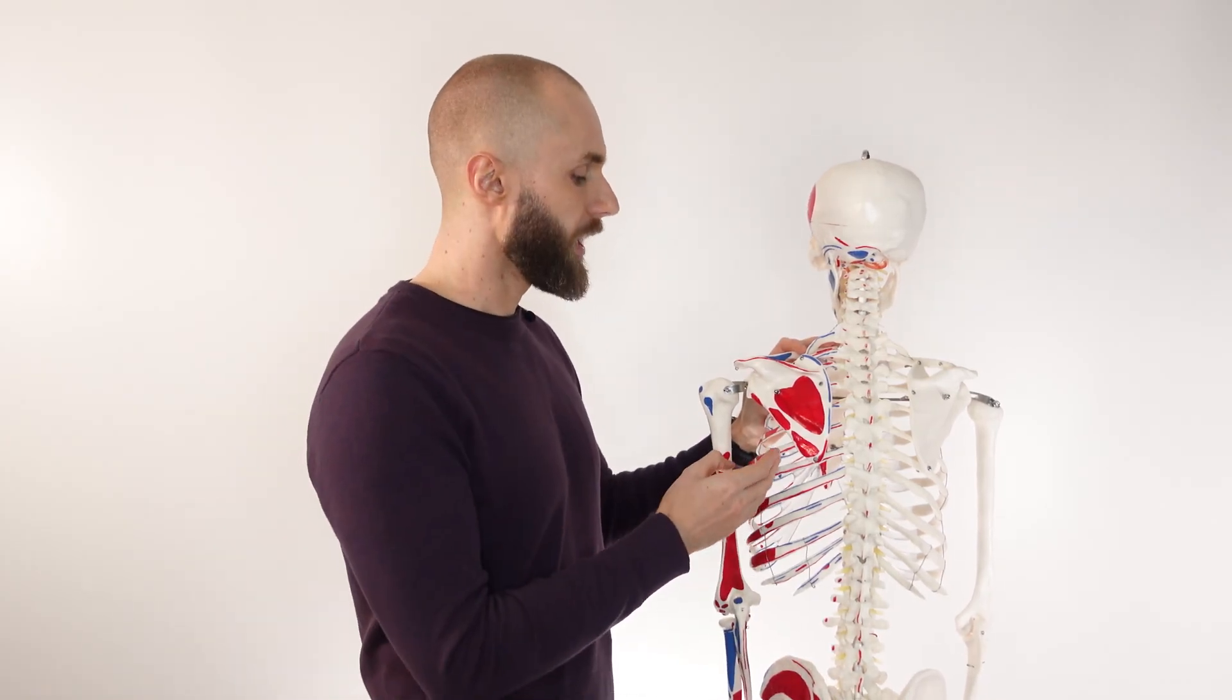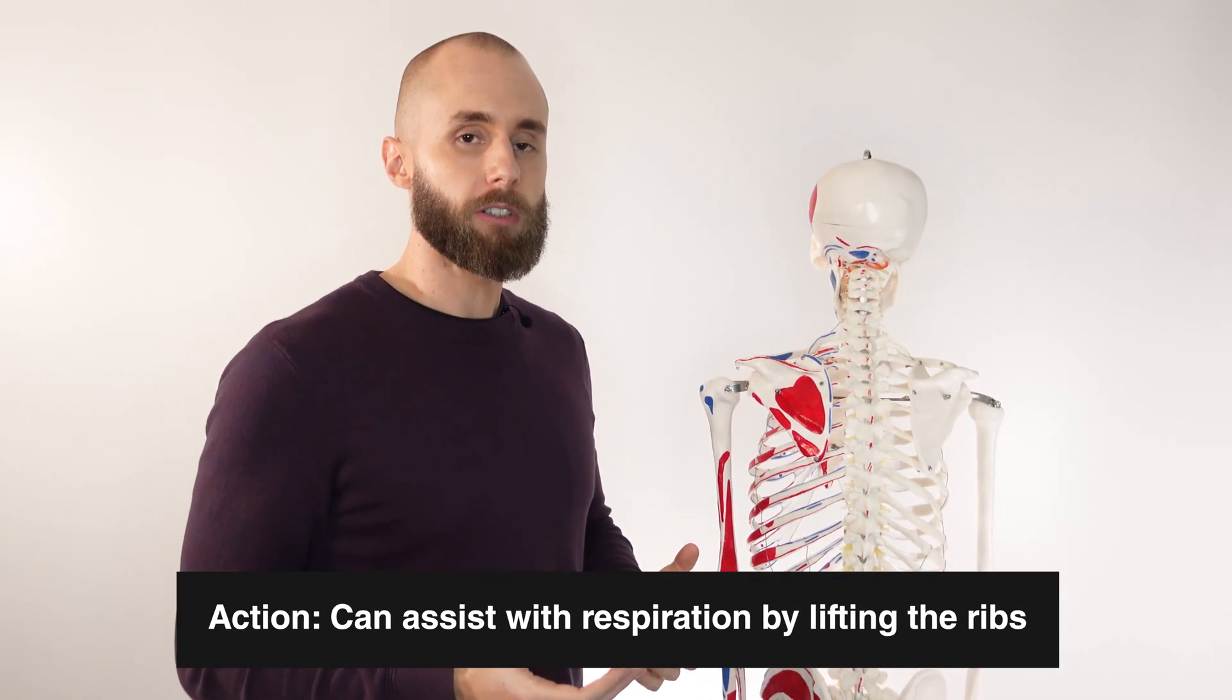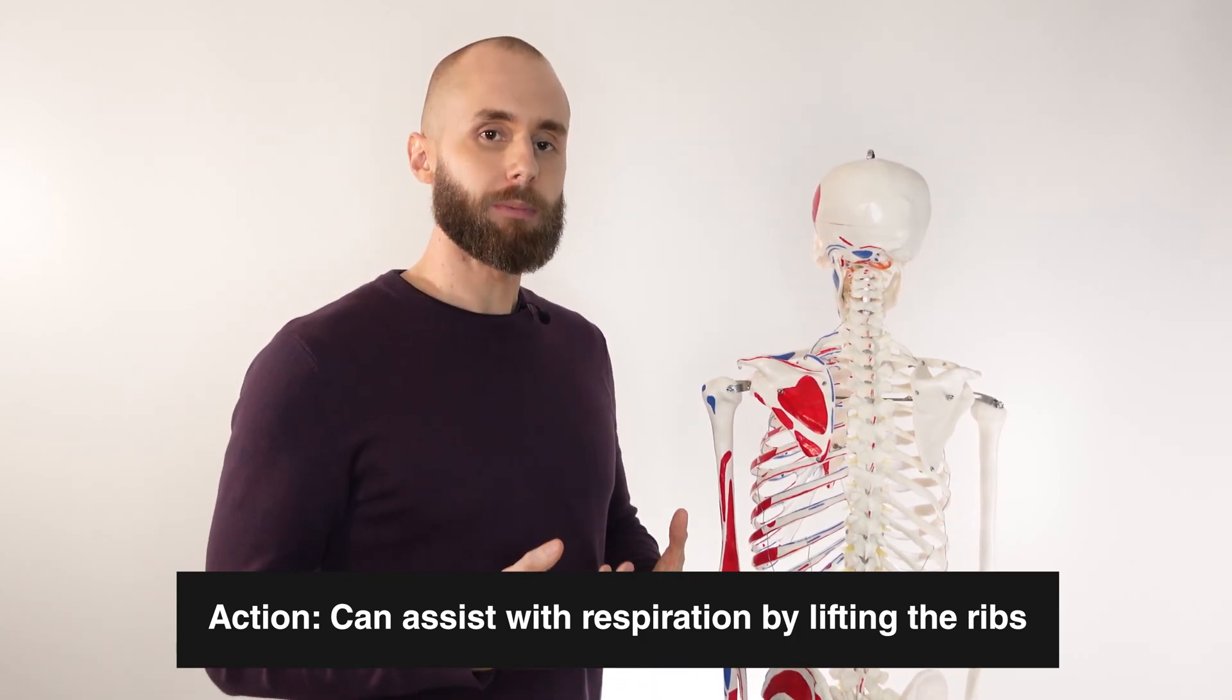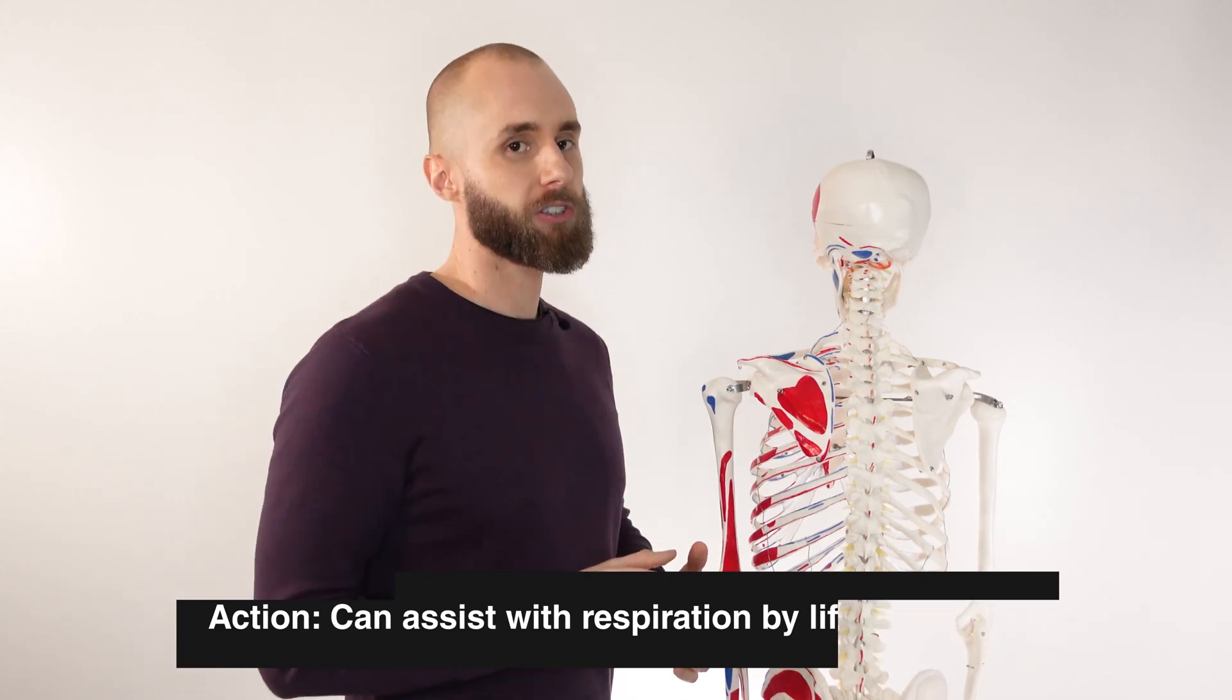So in addition to that protraction and rotation, we've also got elevation of the ribs during respiration. It can also lift the ribs up when you're taking in a deep breath. Now this isn't a prime action of the serratus anterior, it just plays an assistive role. It's able to help in that if it needs to.